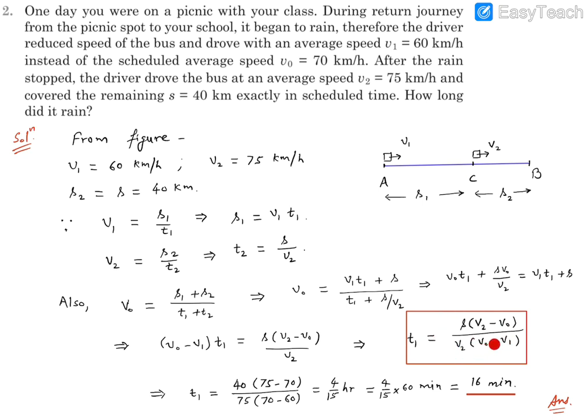So that's the expression for the time during the rain was taking place, that means time taken by the bus to go from A to C. Now we can find the numerical values because all the numbers are known to us. So s is 40, v2 is 75, v0 is 70, and v1 was 60.